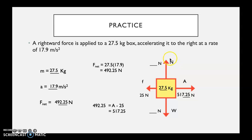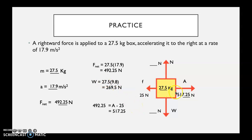For weight and normal force: since motion is horizontal, weight and normal are balanced and identical — the object is not falling through the floor. Weight equals 27.5 times 9.8, which gives 269.5 newtons. Because these two are balanced, the normal force is automatically that same value, 269.5 newtons, with no additional work required.